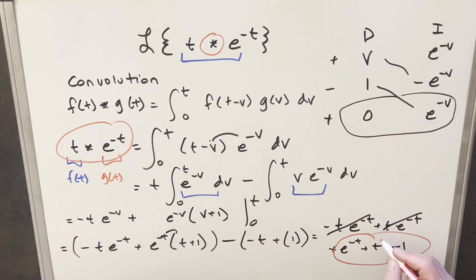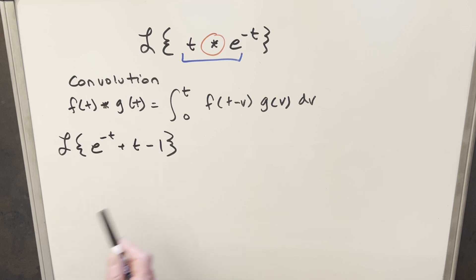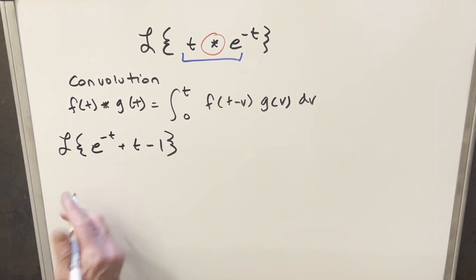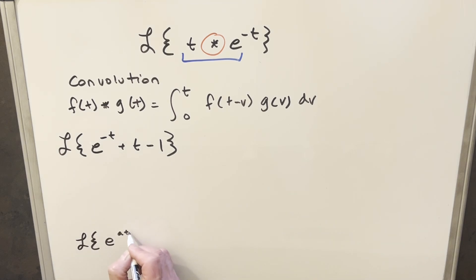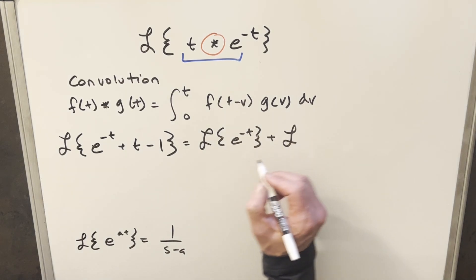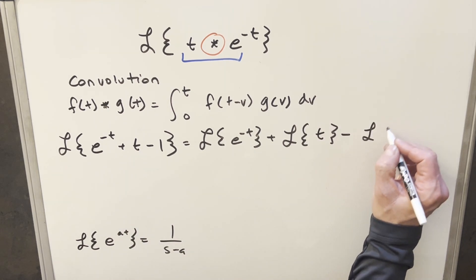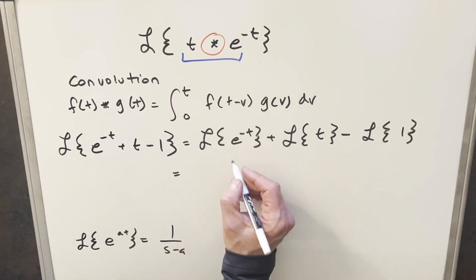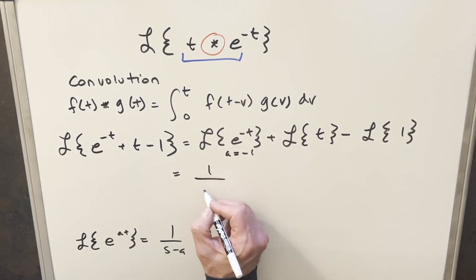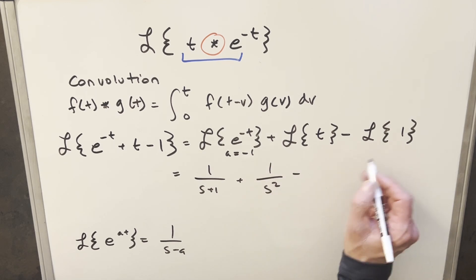Now we haven't really done what was asked yet — all we did was find the convolution. Now we need to take this result and put it into our Laplace transform. This is actually a pretty straightforward Laplace transform. The formula for the Laplace of e to the at is 1 over s minus a. I'll split this into three separate Laplace transforms on the plus and minus signs: Laplace of e to the minus t, plus Laplace of t, minus Laplace of 1. Using the formula with a equal to minus 1, the first term is 1 over s plus 1. Laplace of t is 1 over s squared, and Laplace of 1 is 1 over s.